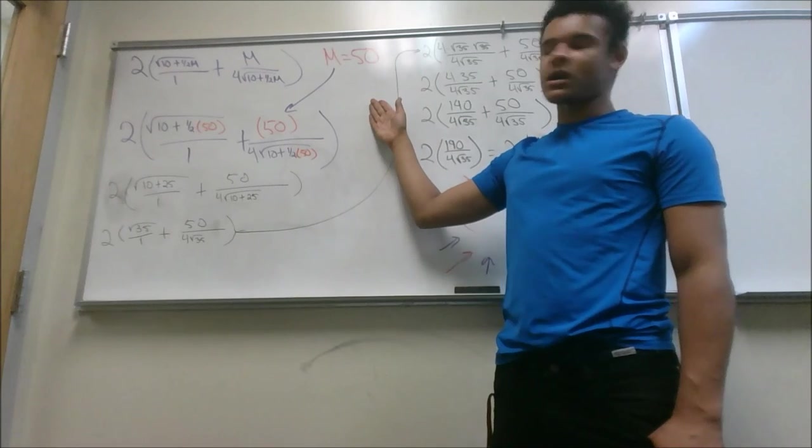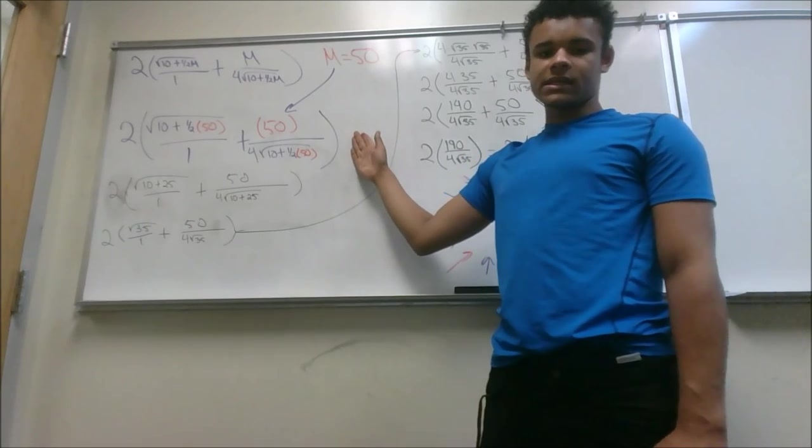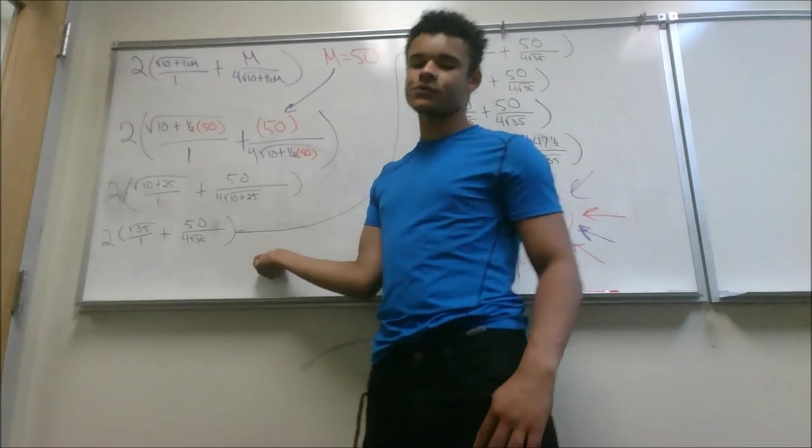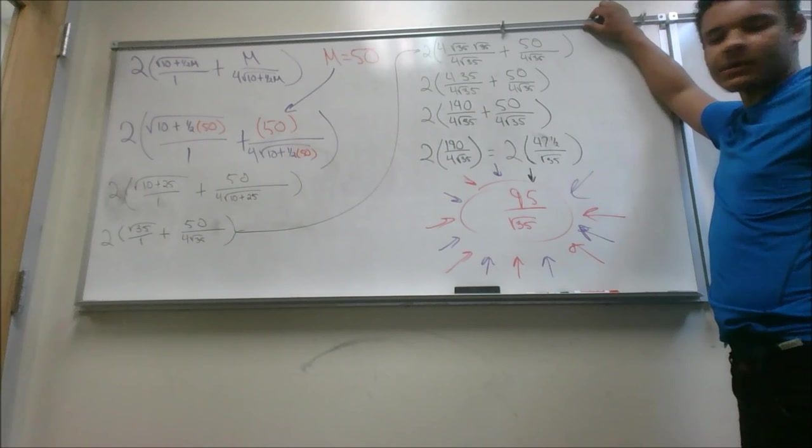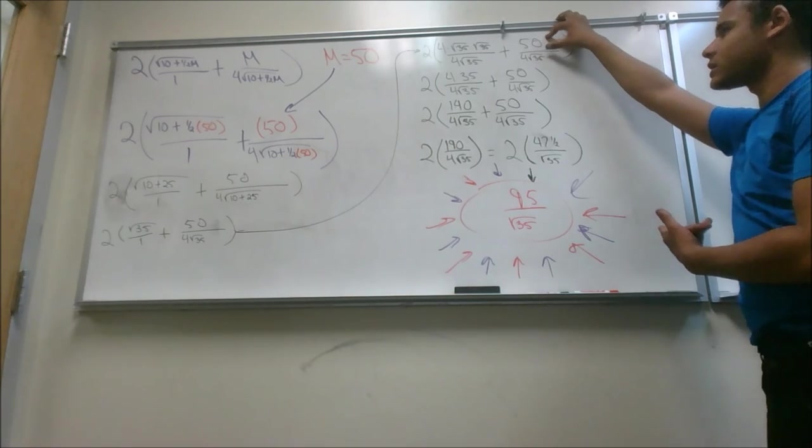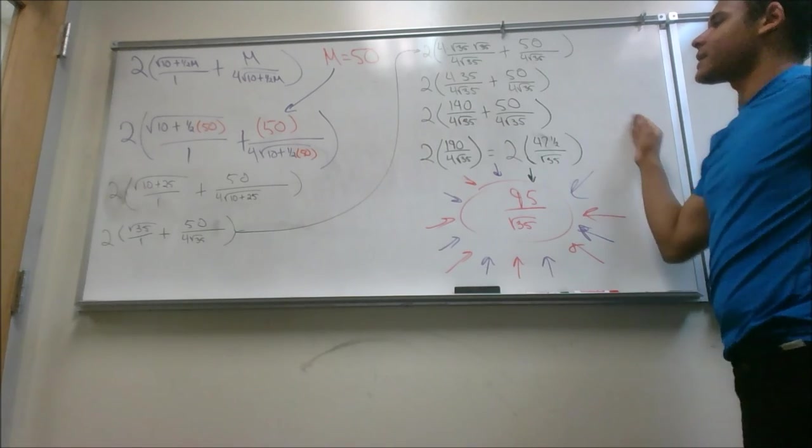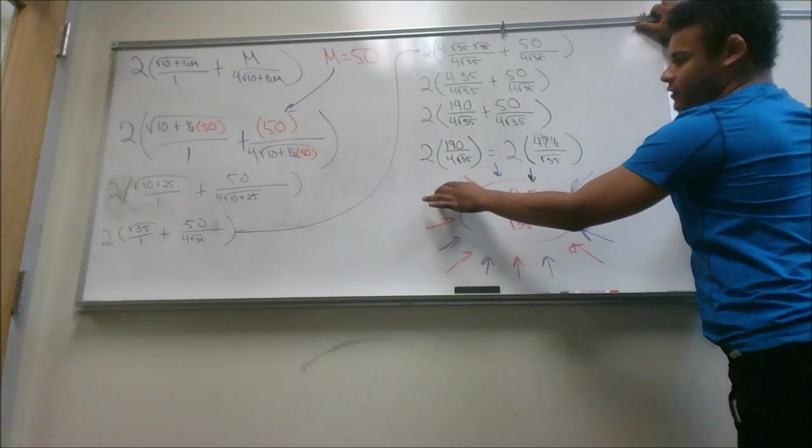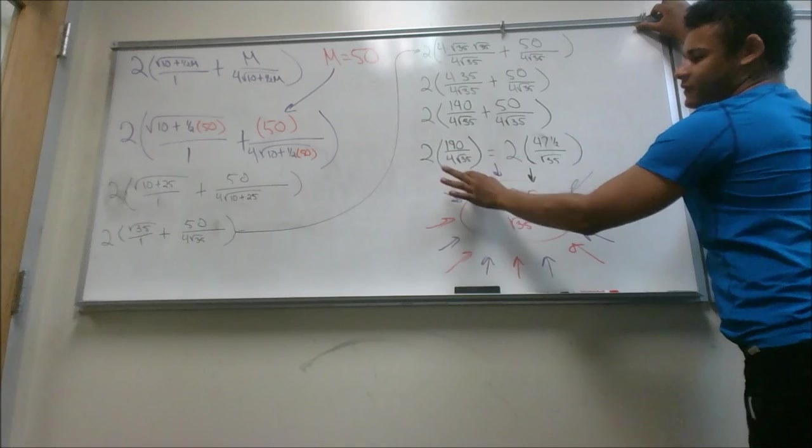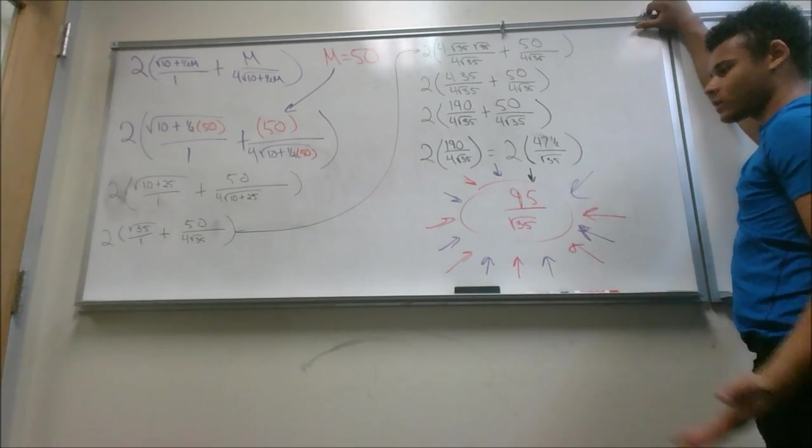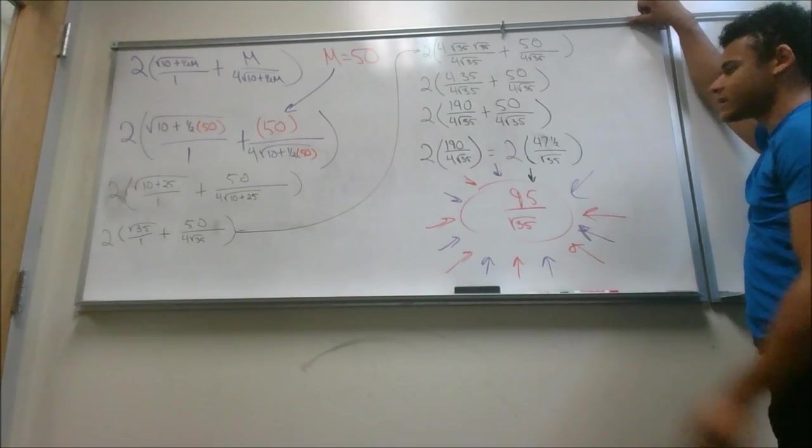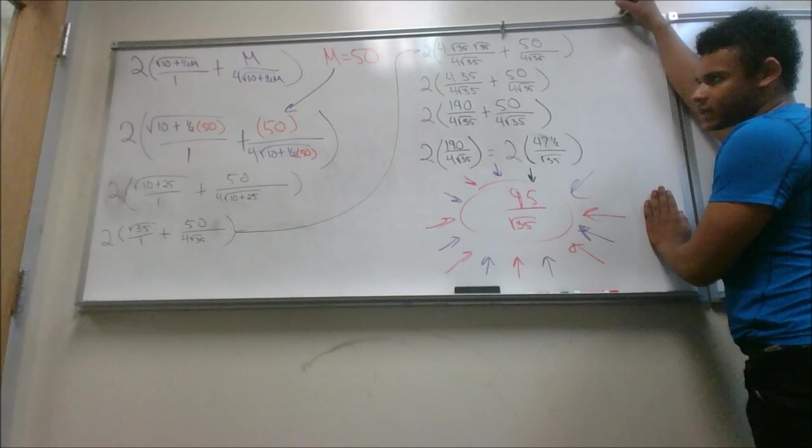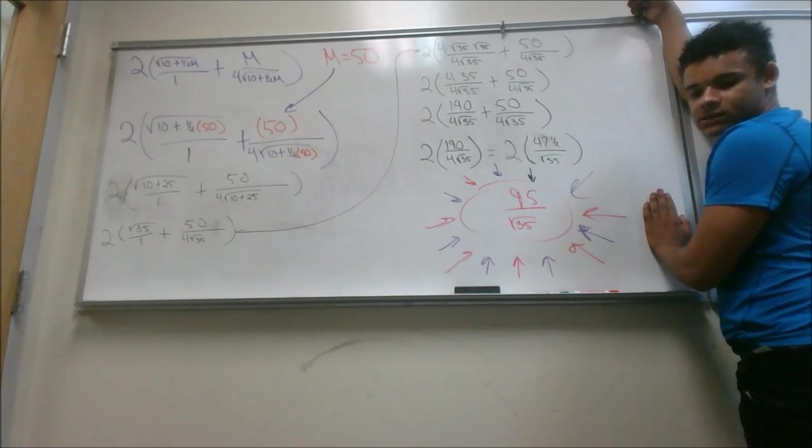Now that we find the derivative, the only thing we need to do to finish this problem is to plug in 50 for every place where there's an M. We see this is the equation we get here. We do the simplification, we'll end up with 2 times the square root of 35 plus 50 over 4 times the square root of 35. Since we're adding fractions, we'll have to make the denominators the same. We do that by multiplying each fraction by the denominator of the other fraction. You multiply all this out, and you end up with 140 over 4 times the square root of 35 plus 50 over 4 times the square root of 35 by 2. Add those together, which is the same. Once you simplify these, you get 47 and a half over the square root of 35 times 2. Once you perform the operation, you end up with the answer 95 over the square root of 35. This is the final answer for the patient's sensitivity to a drug that's 50 milligrams.